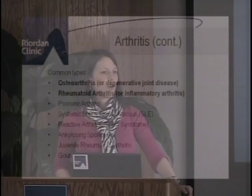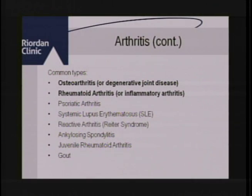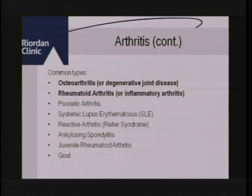The most common types of arthritis — I've highlighted the two most common that we'll really be talking about today. The first one is called osteoarthritis, more commonly known as degenerative joint disease. This is what we typically think of when we think of arthritis — the wear and tear on our joints, the wearing down of the cartilage, and the pain we feel. This typically occurs later in life.